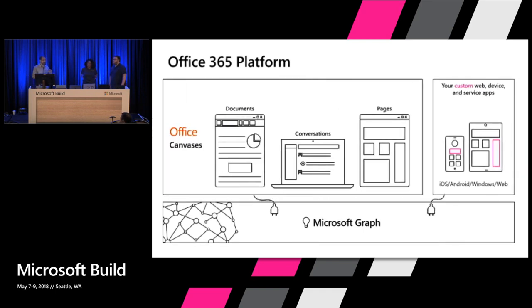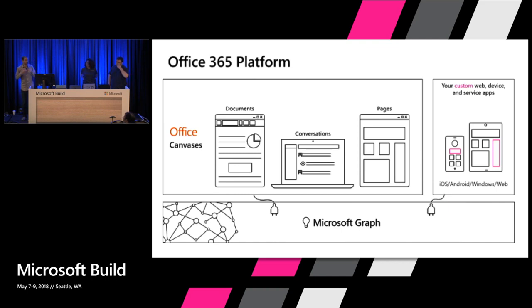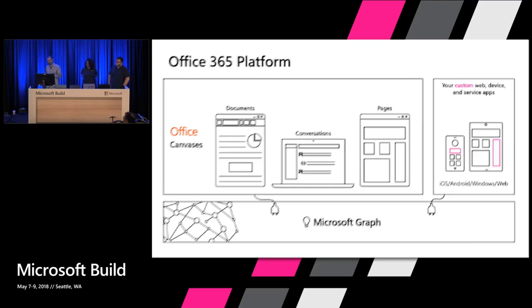On top of the Microsoft Graph, we've built our own applications — canvases like Word, Teams, SharePoint, and Outlook. But you'll also be able to build your own applications, whether those are Windows, iOS, Android, or web applications. They can connect directly into the Microsoft Graph and take advantage of those same insights.